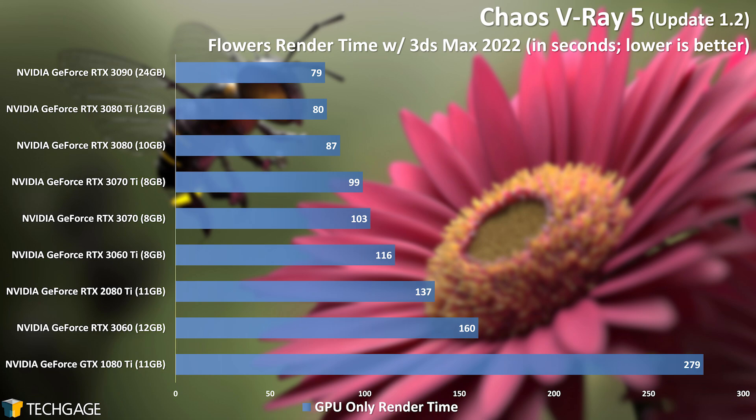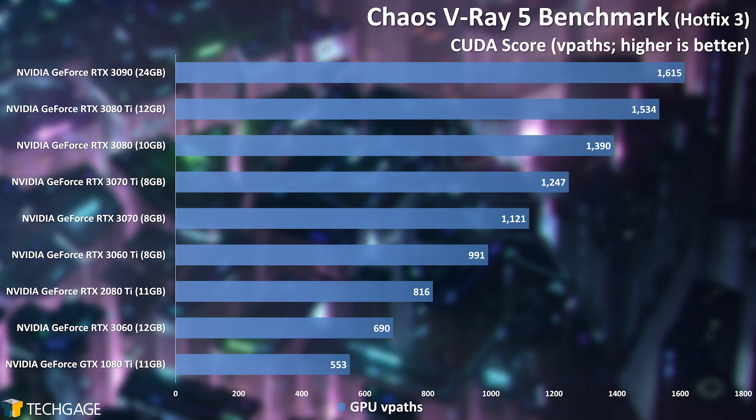Considering we're only dealing with CUDA here, it's really quite something to see the new lower-end RTX 3060 outpace the GTX 1080 Ti pretty dramatically. With a quick look at the same CUDA-only tests in the official V-Ray benchmark, we can see slightly different scaling than what we saw with our Flowers project, but that's really to be expected considering we're dealing with completely different scenes with different levels of complexity. Interestingly, according to this benchmark, the GTX 1080 Ti doesn't fall nearly as far behind the RTX 3060. CUDA feels old-school at this point, so let's move over to Optix.